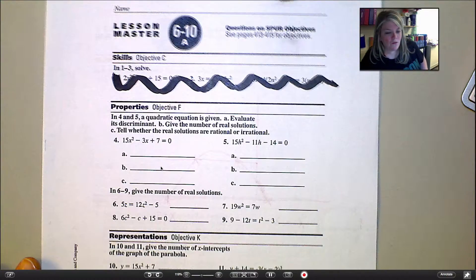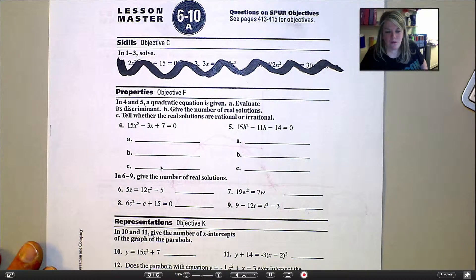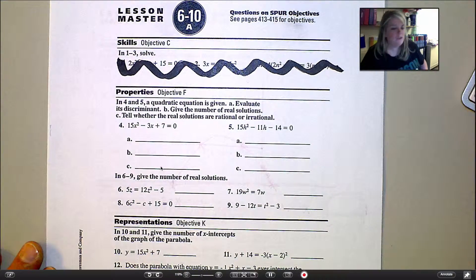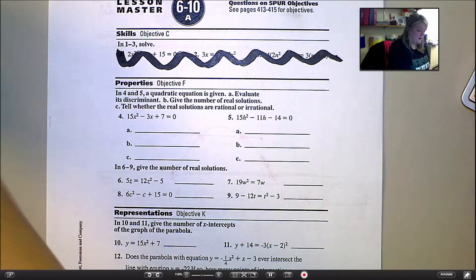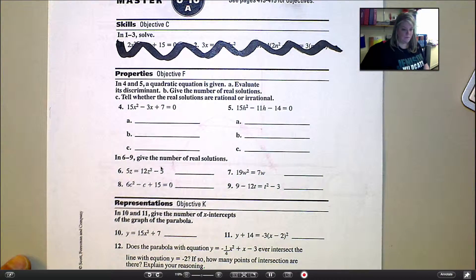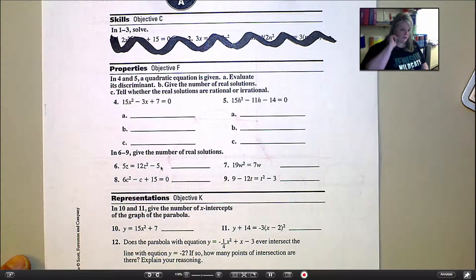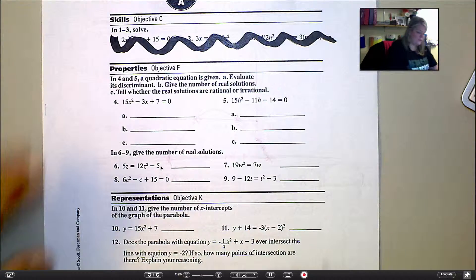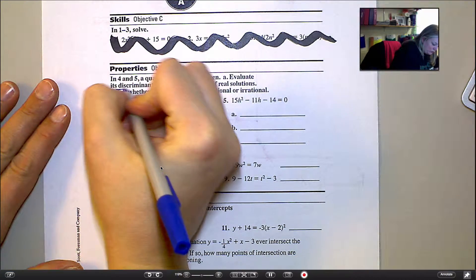Alright, so I want to go over, let's see, either 4 or 5. Let's just try 4 and see what happens. Because I want to talk about these three different questions that you're asked. So first of all, you're asked to evaluate the discriminant.